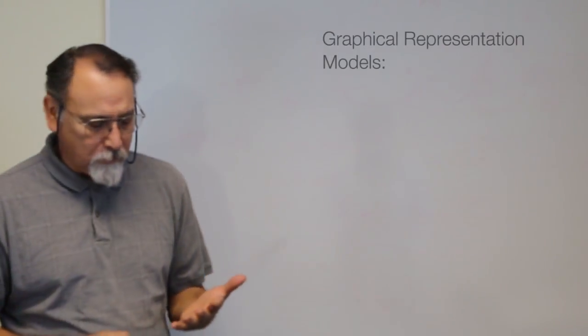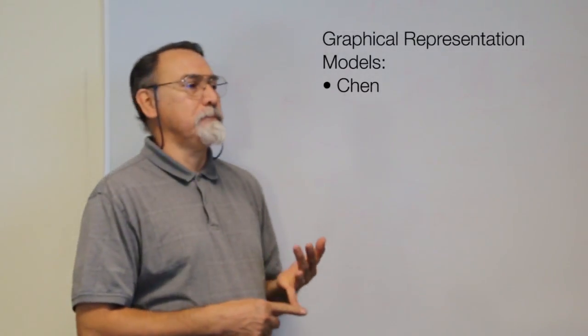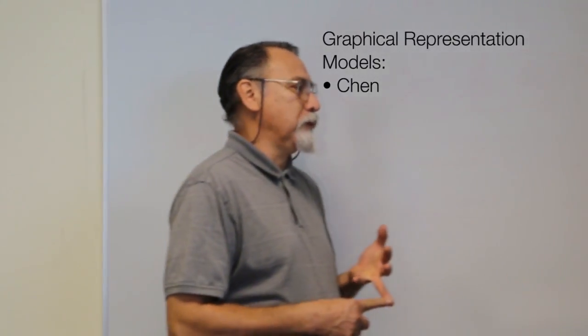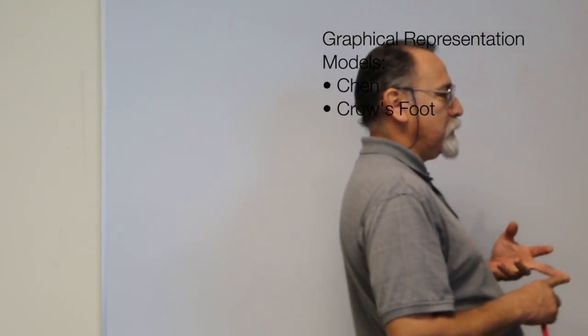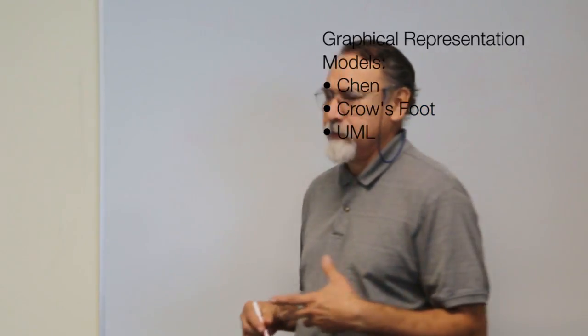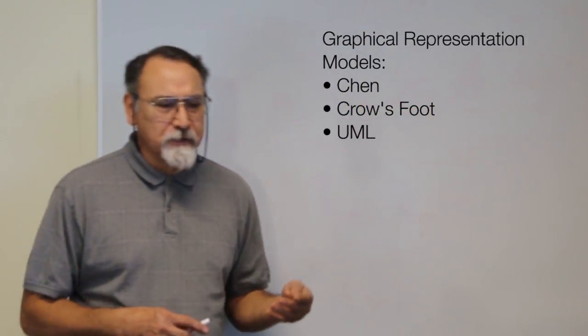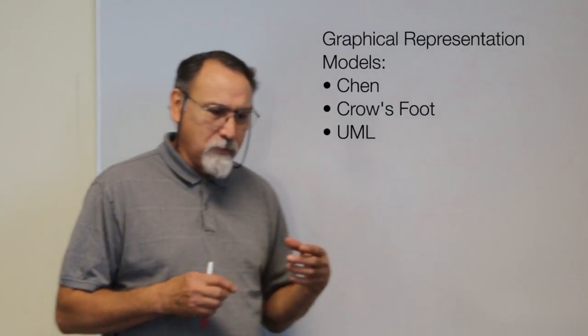We talked about the graphical representation and the models that are used. There is the Chen model, there is the Crowfoot model, and there is the UML model — three different models. The distinction is that some of those models are theoretical in application, more conceptual. Some of them are more implementation-focused. You can draw it, which is separate from building it.